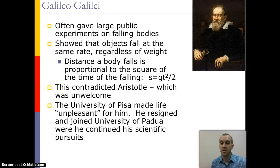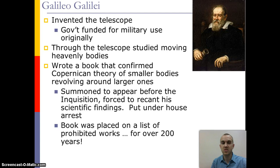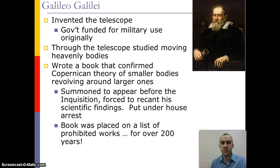The problem was that his work made him unpopular with certain groups, and he ended up resigning and moving to a different school to teach. Eventually he created the telescope, which was funded by the government, and he studied the heavenly bodies with it. He then wrote a book later confirmed by Copernican theory. However, because his work showed that the sun was more the center of our solar system, the Inquisition forced him to redact everything he had done in science and placed him under house arrest for the rest of his life. His works were banned for over 200 years, so much of the amazing work of Galileo went without credit during his time.